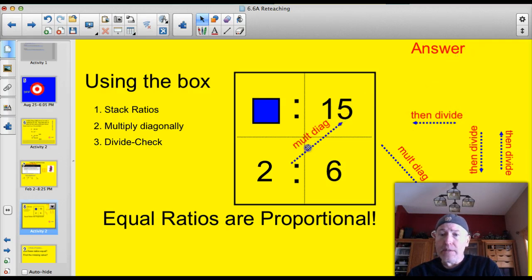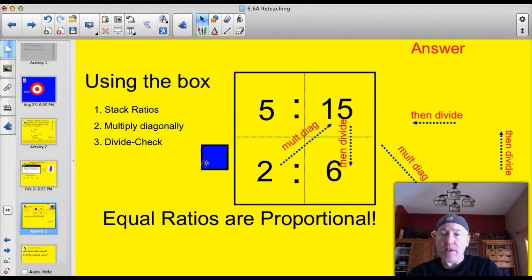So I do 5 times 6, that's 30. 30 divided by 2 is 15. And it worked. What if this number were gone? It's going to work. Multiply diagonally. Divide the other numbers. There it is. I stacked them. Multiply diagonally. 2 times 15 is 30. 30 divided by 6 is 5. It gives you the missing number. So your answer will be in the empty box. You multiply diagonally. Divide the other two numbers. And then let's just check to make sure we're right. 2 times 15 is 30. 5 times 6 is 30. Equal ratios are proportional.